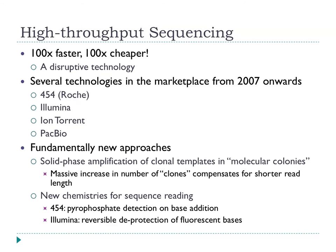Now we have high-throughput sequencing, where sequencing has become at least 100 times faster and cheaper than in the past — probably thousands of times faster and cheaper. There are several technologies in the marketplace with lively competition between them, relying on fundamentally new approaches. We don't propagate DNA inside living cells or plasmids anymore. Instead, we grow molecular colonies in vitro. Many approaches are variations on sequencing-by-synthesis, but with important new features that allow massive parallelisation.